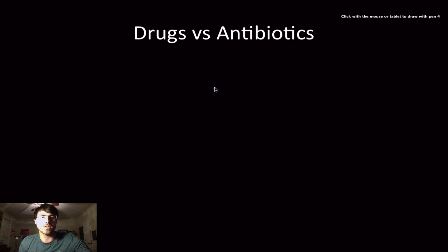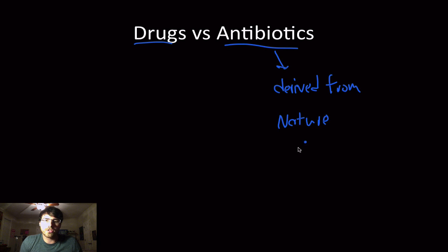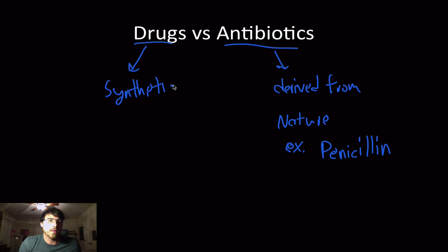Briefly, on the distinction between drugs versus antibiotics: an antibiotic is something derived from nature. You know the story of Alexander Fleming and penicillin — he left his lab, went on vacation, came back and found bacterial growth inhibited around a fungal mold. A drug, on the other hand, is generally produced through a synthetic reaction in a lab. Penicillin, though, for a long time was derived specifically from fungal compounds.